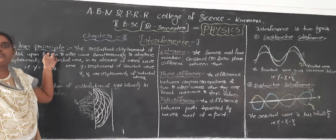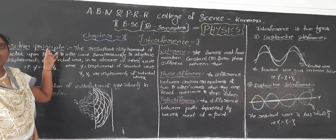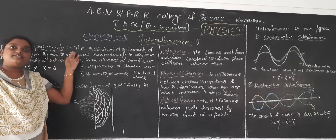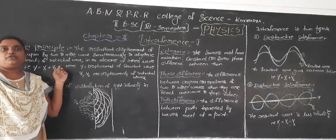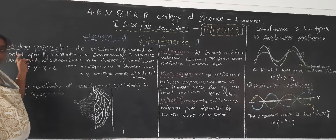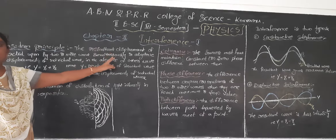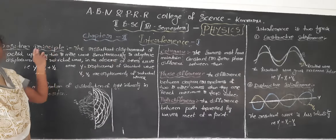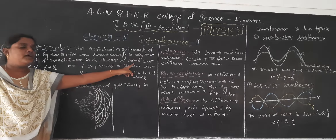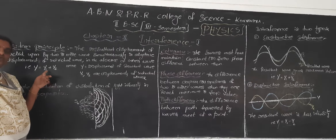Now let us see the important Superposition Principle. We have already discussed about this. The Superposition Principle explains the resultant displacement of a wave. The resultant displacement of a wave acted upon by two or more waves simultaneously is the algebraic sum of displacements of individual waves in the absence of other waves.